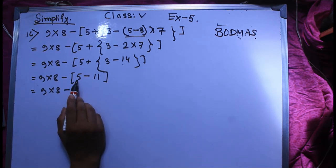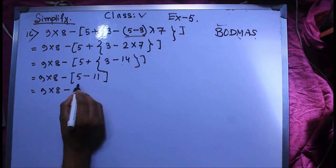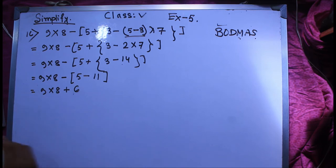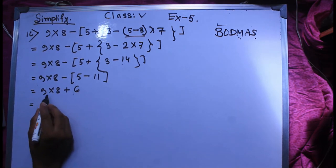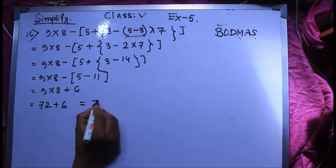9 into 8 minus 11, minus 5 minus. So minus 1 is minus minus. Then we have multiply. It means that one value gives us 72 plus 6, which is 78.